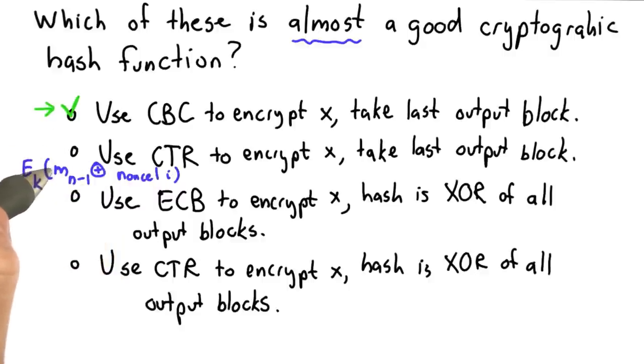But if we want to find that pair of values x and y that hash to the same value, well, in this case, that's easy. We can change any of the previous blocks.